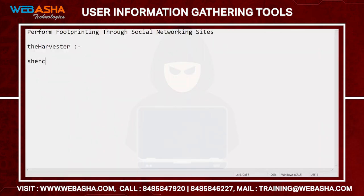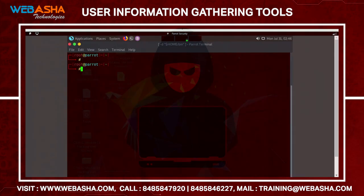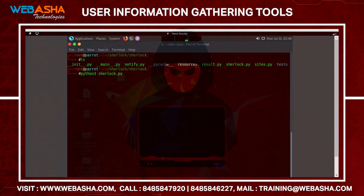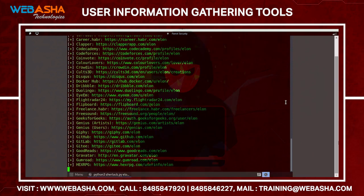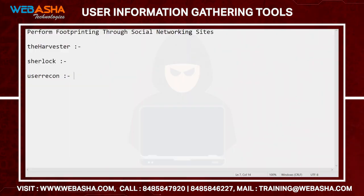Next we have Sherlock. What Sherlock does is gather and find information about any user. If we have a username and want to find that user's information across different portals, the command is: python3 sherlock.py and then the username. Hit Enter and it verifies across different portals, showing information from multiple social media sites.